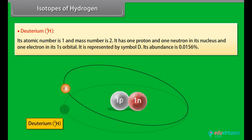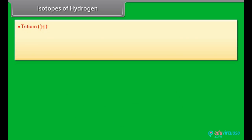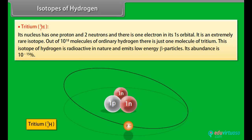Its abundance is 0.0156%. Tritium: Its nucleus has one proton and two neutrons and there is one electron in its 1s orbital. It is an extremely rare isotope. Out of 10 to the power 18 molecules of ordinary hydrogen, there is just one molecule of tritium. This isotope of hydrogen is radioactive in nature and emits low energy beta particles. Its abundance is 10 raised to the power minus 15%.